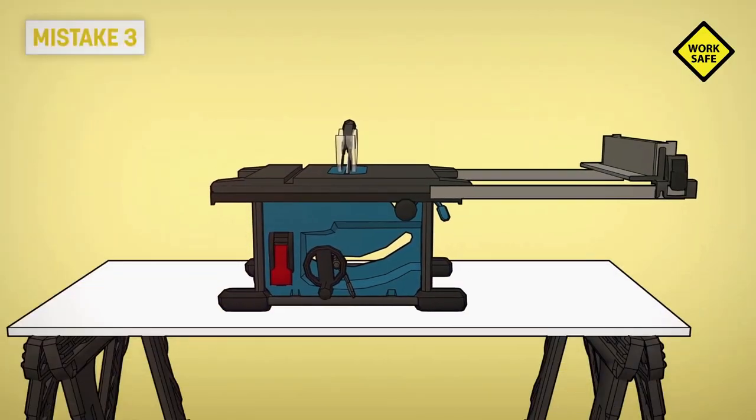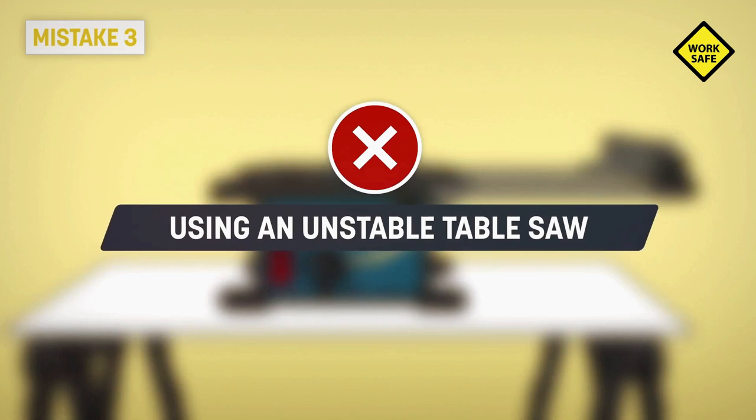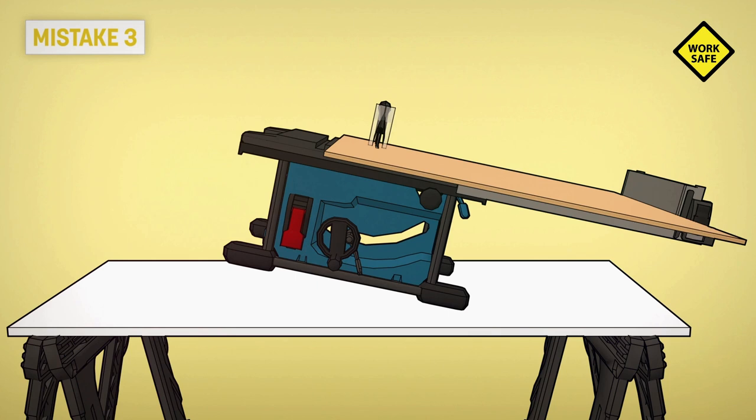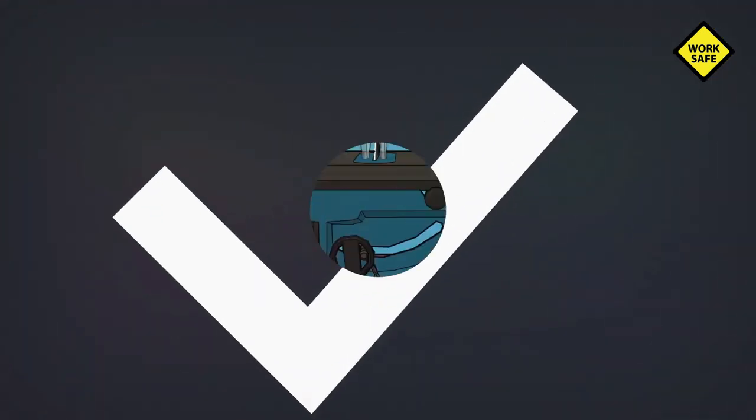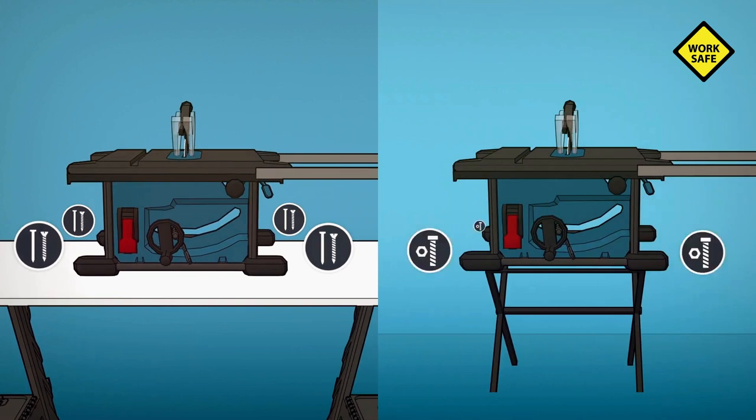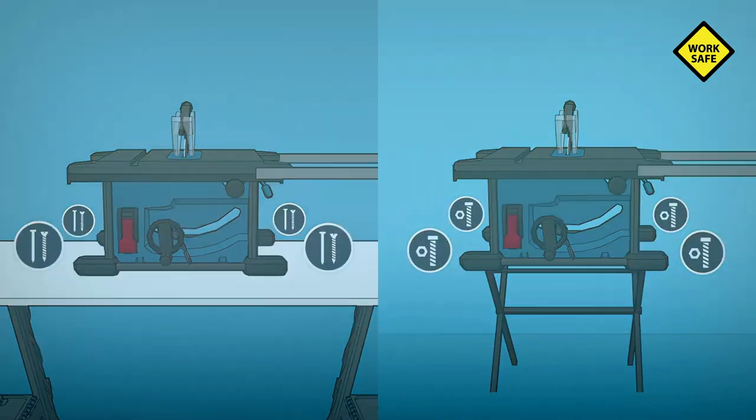Mistake three: using an unstable table saw. To keep the saw from moving during the cut or tipping when cutting large workpieces, it needs to be securely mounted on a workbench or table saw stand. By the way, never use a table saw that's placed on the floor, even if you can mount it to something.